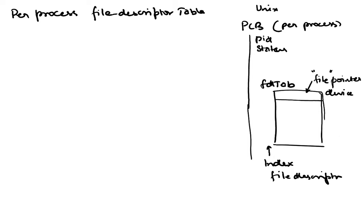In Unix, even devices are accessed using the notion of a file descriptor: you open the device, get a file descriptor, and use that handle to read or write. The OS makes the necessary internal calls so you don't have to worry about device-specific implementation. In Pintos, we need to find a place for this — it will go inside our thread control block, our struct thread.